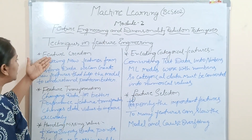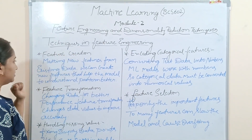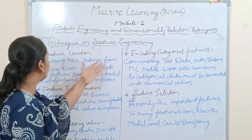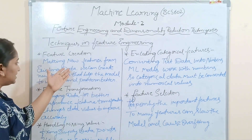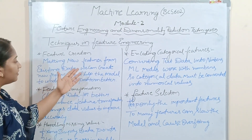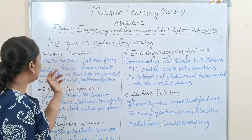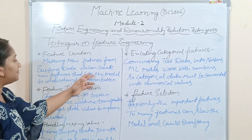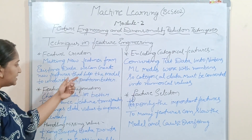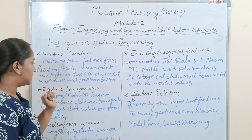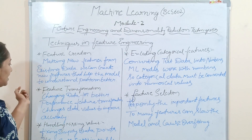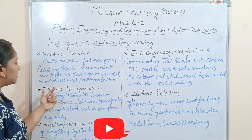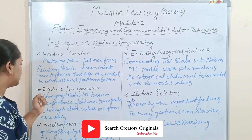Starting with feature creation — making new features from existing data. We can create new features that help the model understand patterns better. The next technique is feature transformation: changing data for better performance.